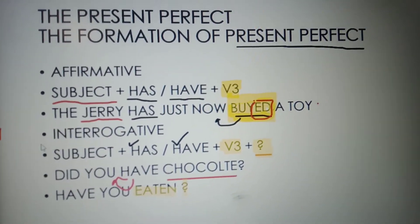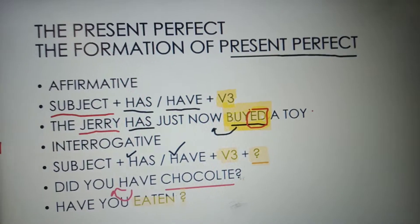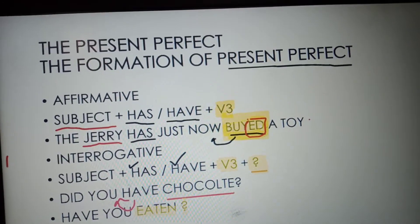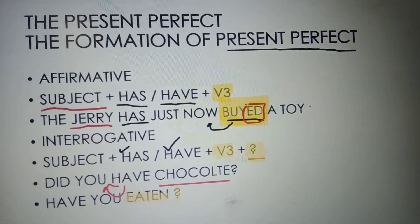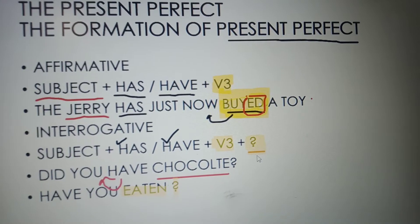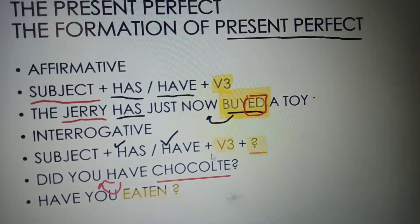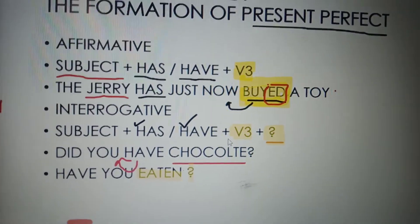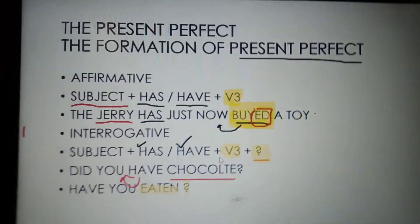In the interrogative form: Has/Have + Subject + V3 + question mark. For example, 'Did you have a chocolate?' or 'Have you eaten?' or 'What did you eat?'